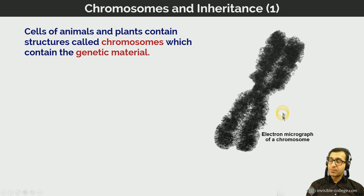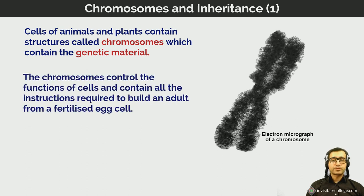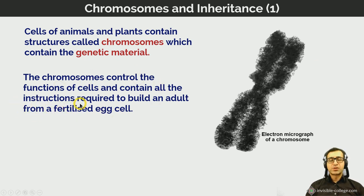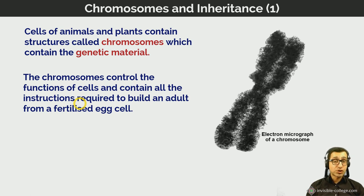Chromosomes control the functions of cells, particularly the ways in which cells divide, and they contain all the instructions required to build an adult from a fertilized egg cell. The DNA in chromosomes is a storage system for genes — the units of heritable information. Genes code for proteins, and proteins give cells their structure and function. The nucleus contains DNA organized into chromosomes, which contain the genetic instructions controlling the structure and function of organisms.